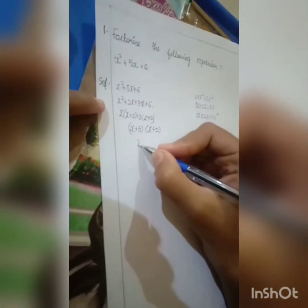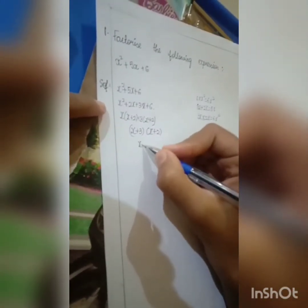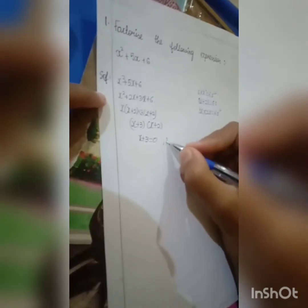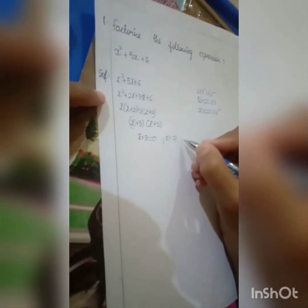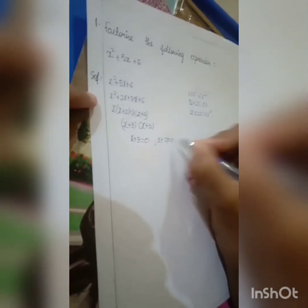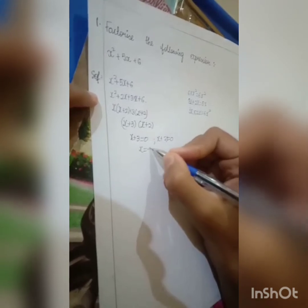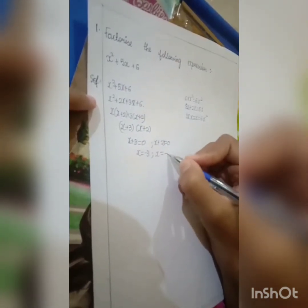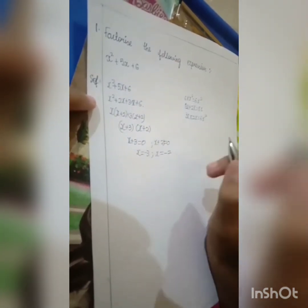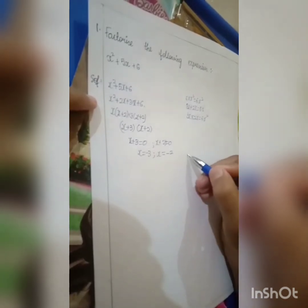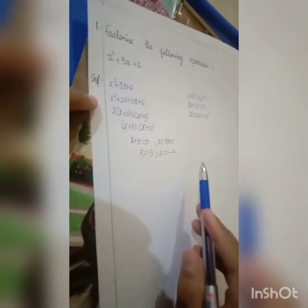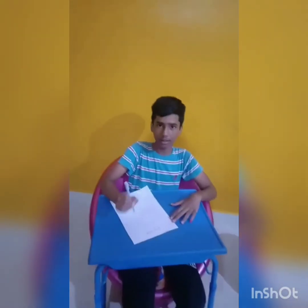Whereas x plus 3 equals 0 and x plus 2 equals 0. Therefore x equals minus 3, and x equals minus 2. This is the answer from which we factorized the following. Let me give a challenge to my friend.